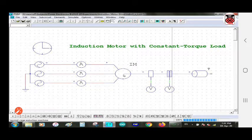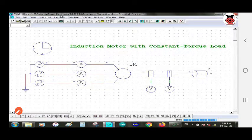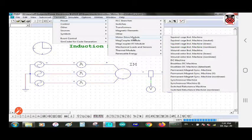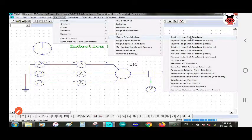And then, this is a squirrel cage induction machine. You can take this element from element, power, motor drive module, and this is a squirrel cage induction machine. You can take this from here.